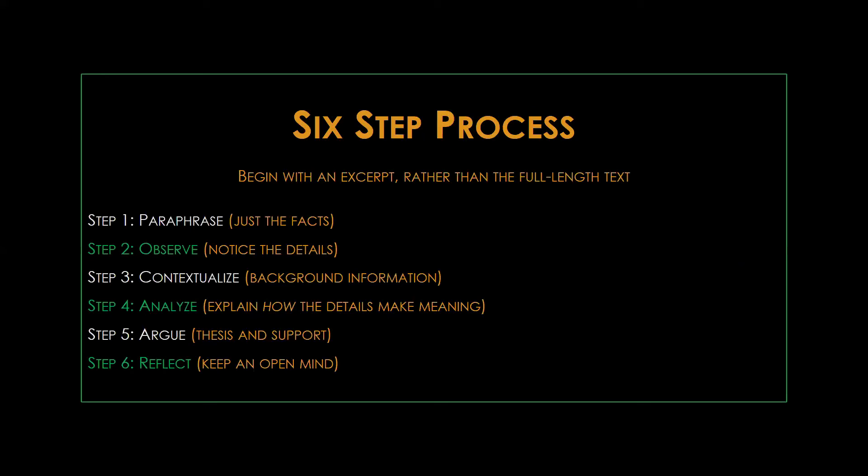Step three is contextualize. Think about relevant facts or background information for the text. Step four is analyze. Select a few significant textual elements or contextualizing frameworks from your notes, and explain how each of them is important to the meaning of the text. This is the moment where you're moving towards interpretation, by articulating how particular details work to create meaning.